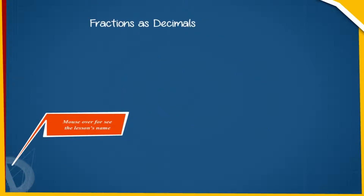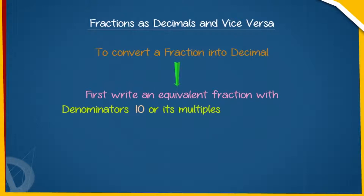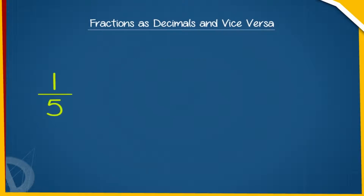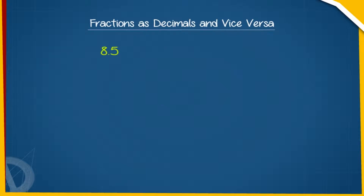Fractions as Decimals and Vice Versa: To convert a fraction into a decimal, we first write an equivalent fraction with denominator 10 or its multiples 100, 1000, etc. For example, 1 by 5 can be written as 2 by 10, which is 0.2. We can also convert a decimal into a fraction. For example, 8.5 equals 8 plus 0.5, equals 8 plus 5 by 10, equals 8 plus 1 by 2, equals 8 and 1 by 2.